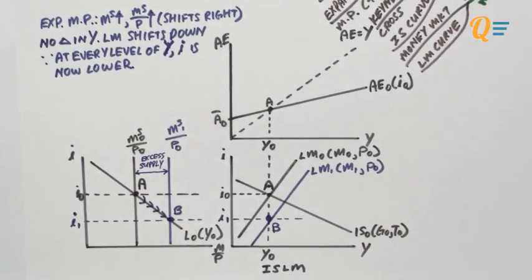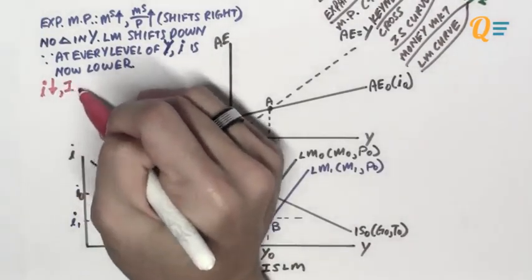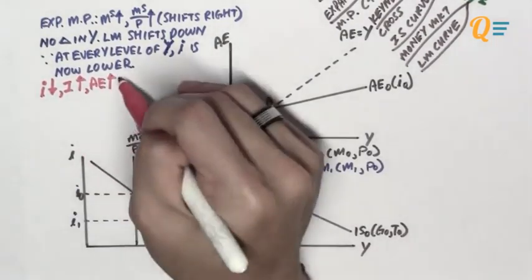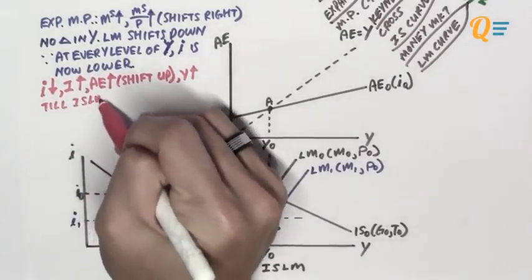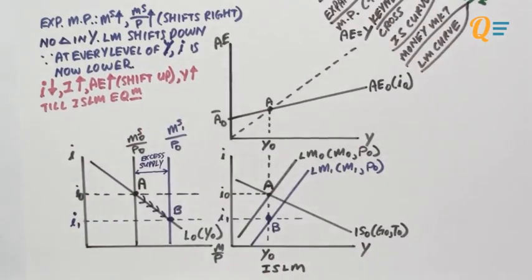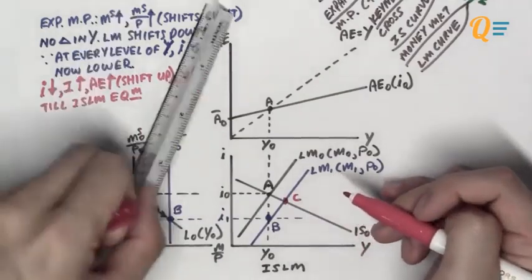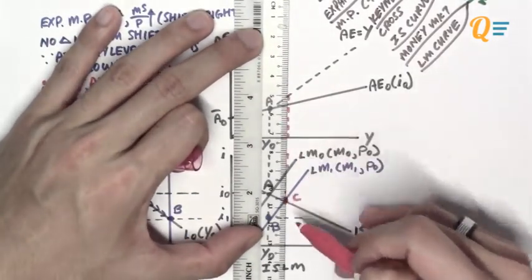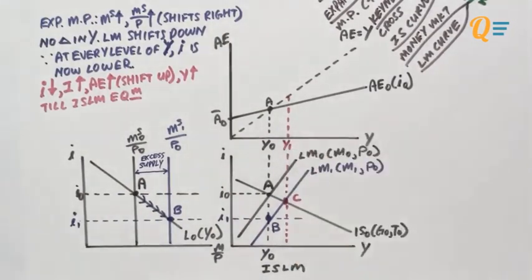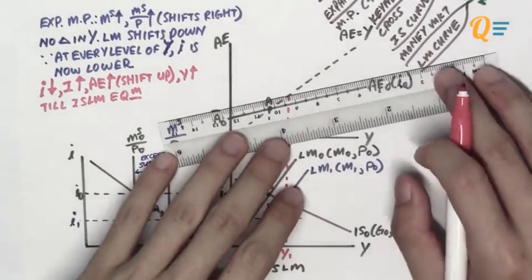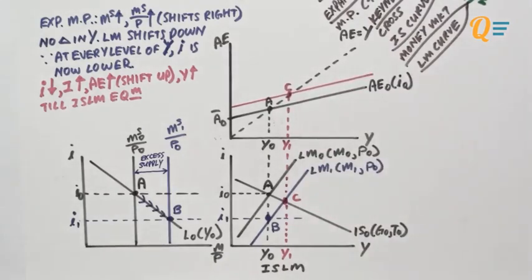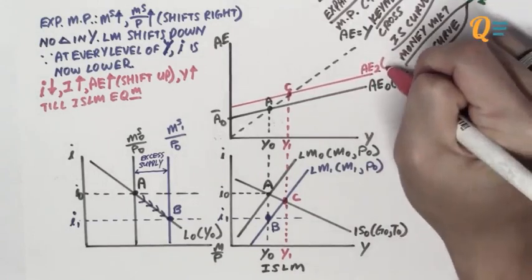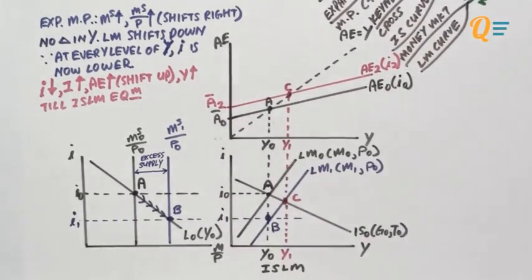Now that we've cleared the money market, let's look at the Keynesian cross diagram. Interest rates have fallen, so investment will rise, AE will increase — shift the AE curve upwards — and income is expected to rise as well. This continues until we reach the new ISLM equilibrium at point C. The final level of output is Y1. The AE curve shifts up to AE2, corresponding to interest rate level I2 and autonomous expenditure A-bar 2.